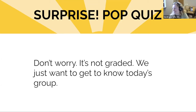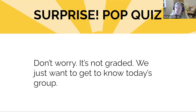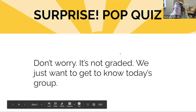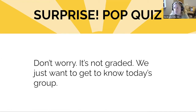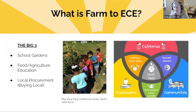Looking at the poll results, overwhelmingly everyone said education — and that is one of the three pillars of Farm to School. The three pillars are: school gardens, education, and local procurement, which means buying local food. Sometimes you might hear these called the three C's of Farm to School. Farm to School can happen in the classroom — indoors or outdoors — in the cafeteria or kitchen, and in the community, because Farm to Early Care cannot happen on its own.